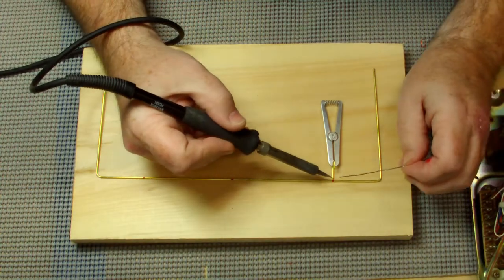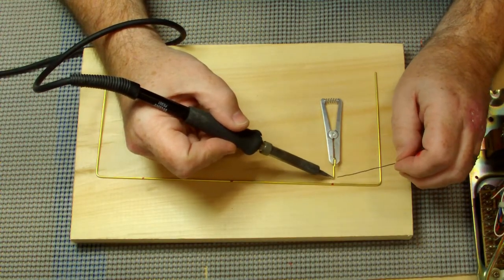To solder, I'm just using a regular Weller iron with typical electronic solder on the brass.